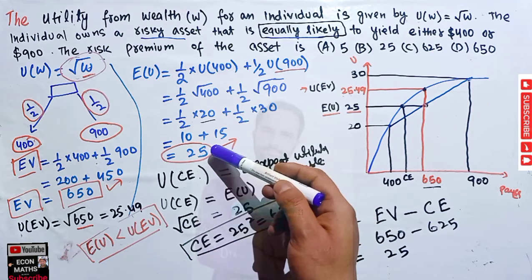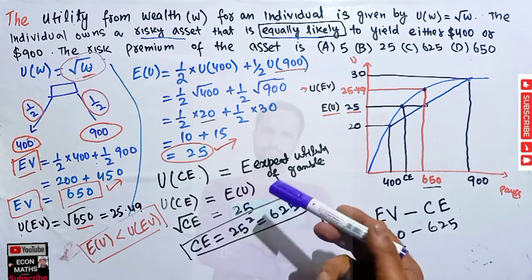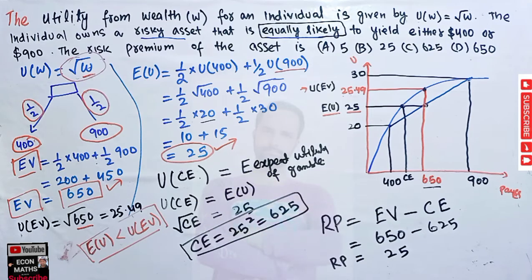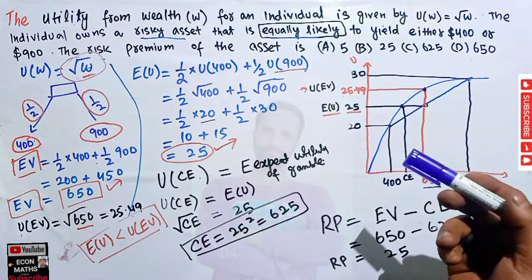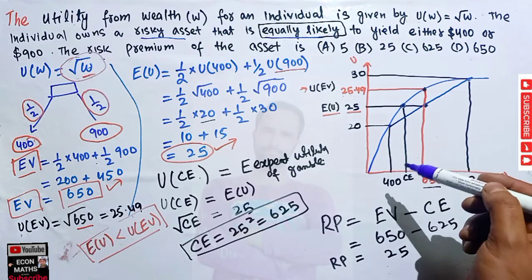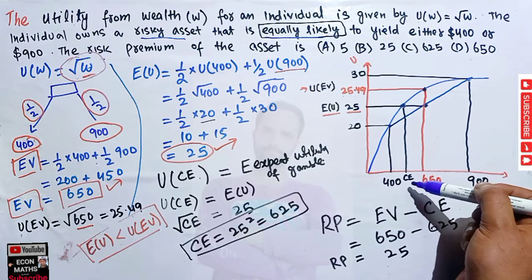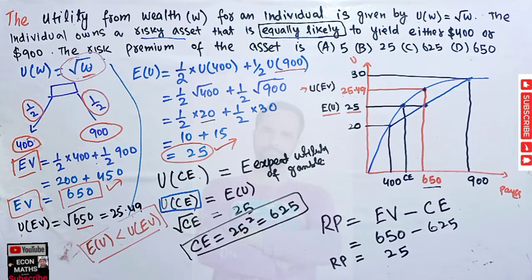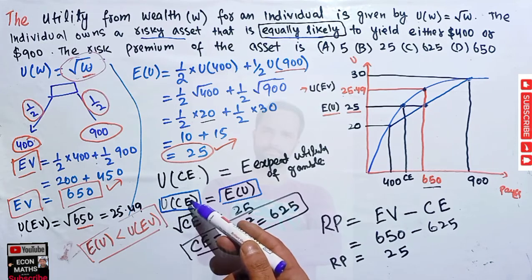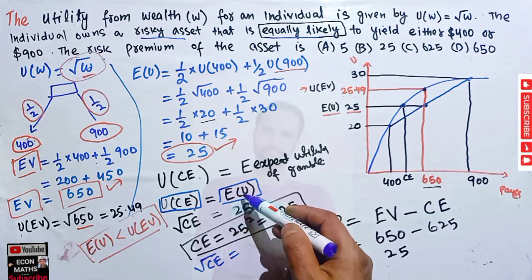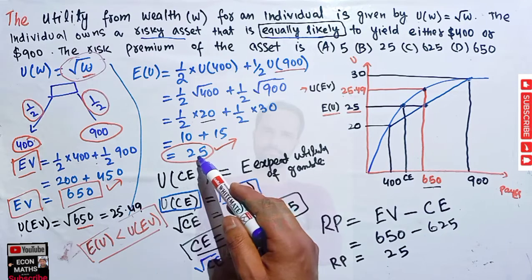Now we need to find the certain amount that makes the individual indifferent between the gamble and the certain amount — this is called the certainty equivalent. To calculate the certainty equivalent, we set the utility of the certainty equivalent equal to the expected utility of the lottery: u(CE) = E[U]. That means √CE = 25, since the expected utility of the lottery is 25.